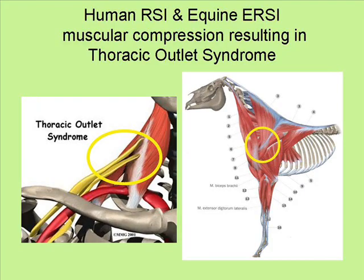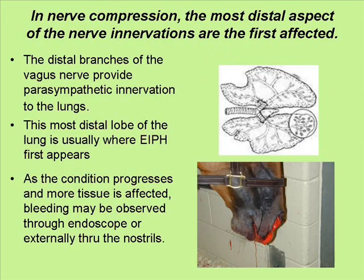Here is a picture comparison of human RSI and equine ERSI muscular compression resulting in thoracic outlet syndrome. In nerve compression, the most distal aspect of the nerve innervations are the first affected. The distal branches of the vagus nerve provide parasympathetic innervation to the lungs. The most distal lobe of the lung is usually where EIPH first appears. As the condition progresses and more tissue is affected, bleeding may be observed through the endoscope or externally through the nostrils.